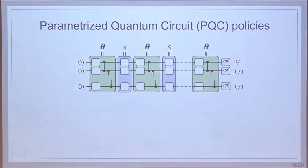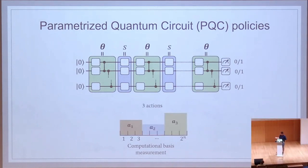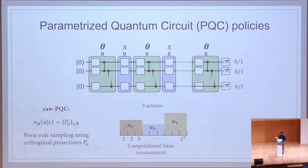Let's look more closely at how we define policies from parameterized quantum circuits. The specific architecture is not very important. What matters is how we use measurements of the circuit's output to define a probability distribution over actions given the input state. A measurement in the computational basis naturally defines such a distribution. To design a policy over three actions, we divide the full space into three subspaces. When we measure a certain computational basis outcome, we perform the action corresponding to that subspace. Mathematically, this defines what we call a raw PQC policy — the expectation value of a projection onto a subspace with respect to the output quantum state of the PQC.